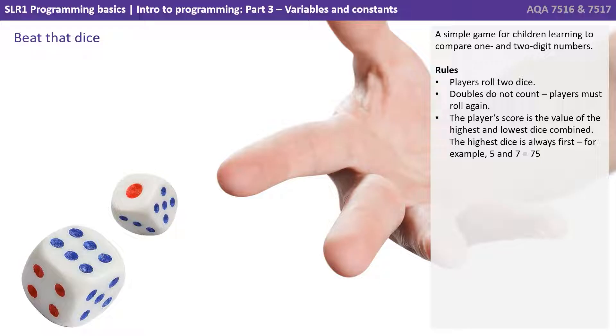The player rolls two dice. Doubles do not count - the player must roll again. The player's score is the value of the highest and the lowest dice combined, and the highest dice is always first. So if you roll a five and seven, the result would be seventy-five.